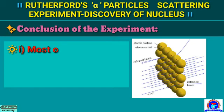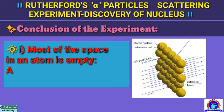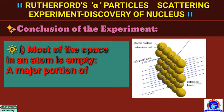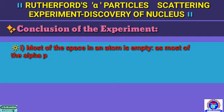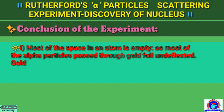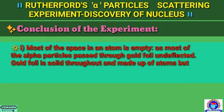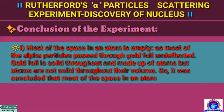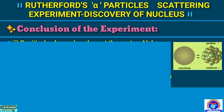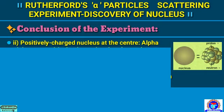What are the conclusions derived by Rutherford? Number 1: most of the space in an atom is empty. That means a major portion of the space in an atom is empty, as most of the alpha particles pass through the gold foil undeflected. Gold foil is solid throughout and made up of atoms, but atoms are not solid throughout their volume. So it was concluded that most of the space in an atom is empty.